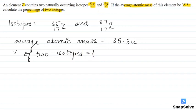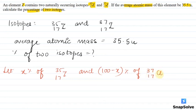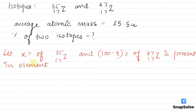Let x percentage of 35-17-Z and 100 minus x percentage of 37-17-Z is present in the element.